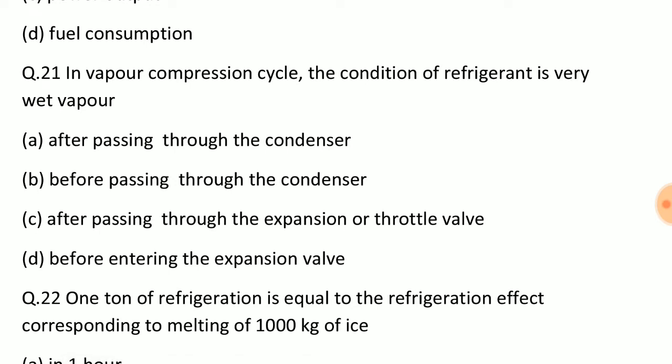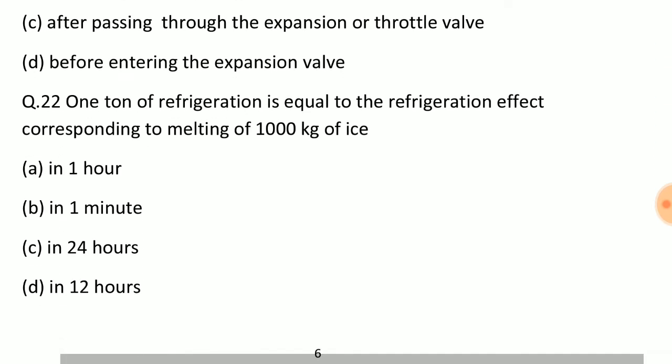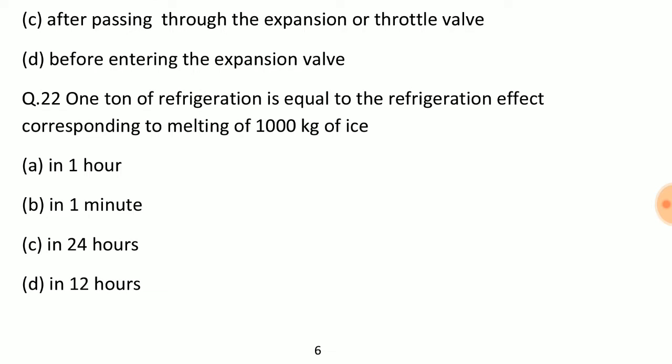Question: In vapor compression cycle, the condition of refrigerant is very wet vapor? Answer: Option C, after passing through the expansion or throttle valve. Question: One ton of refrigerant is equal to the refrigerant effect corresponding to melting of 1000 kg of ice? Answer: Option C, in 24 hours.